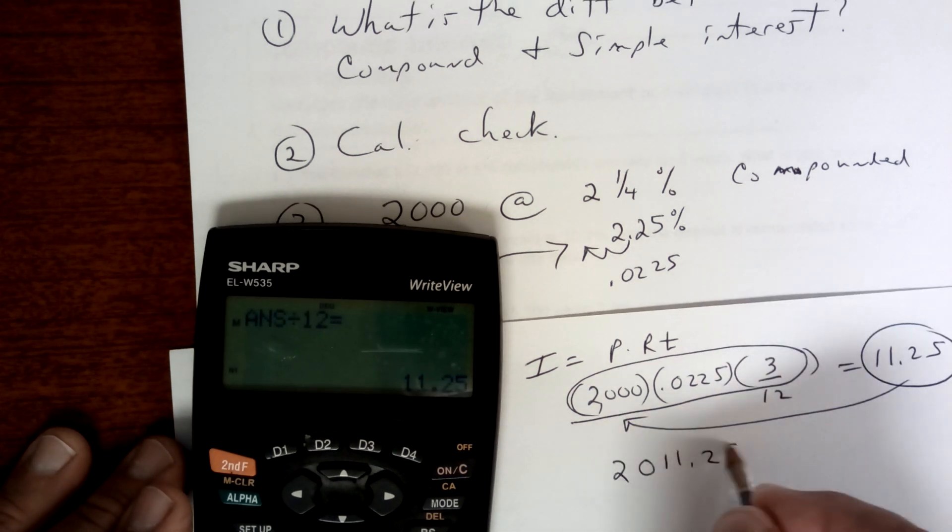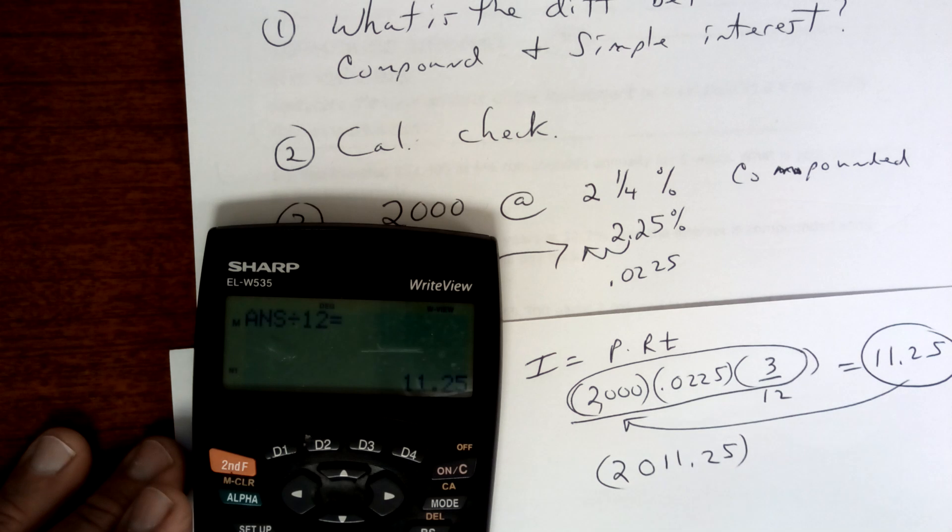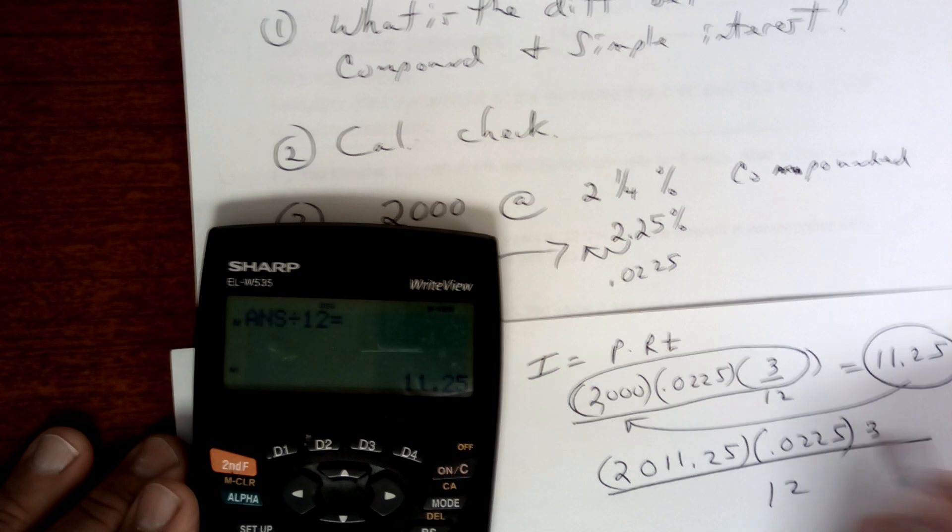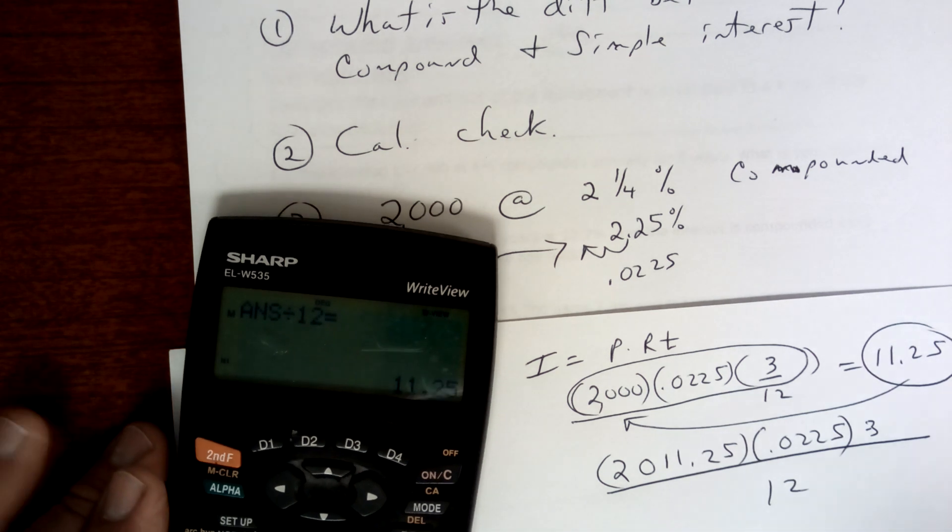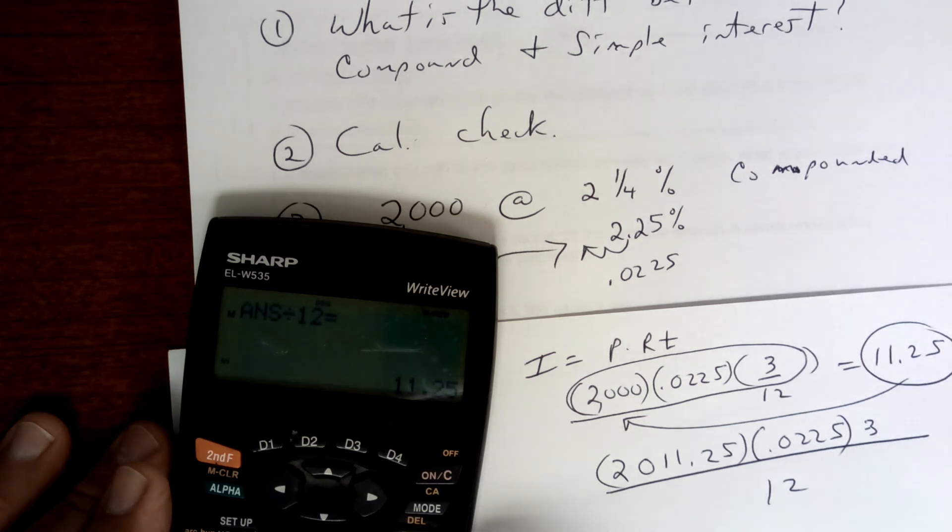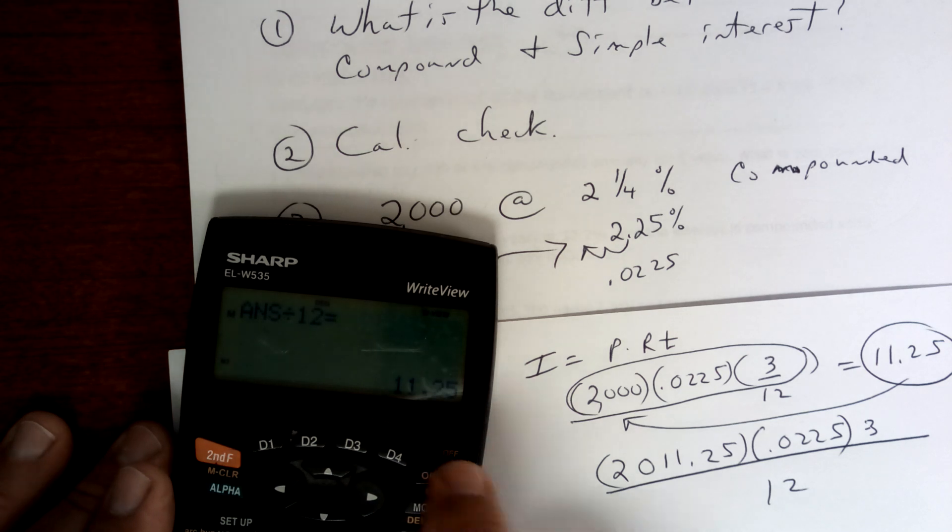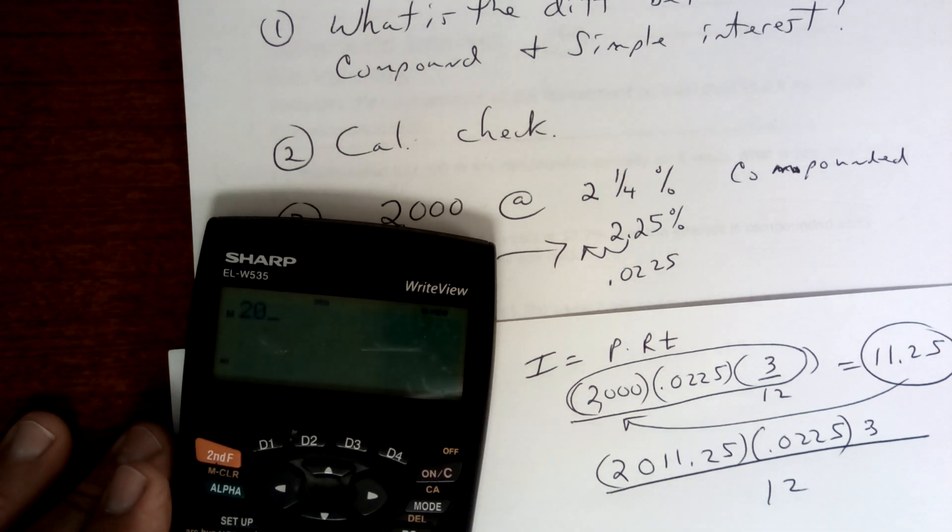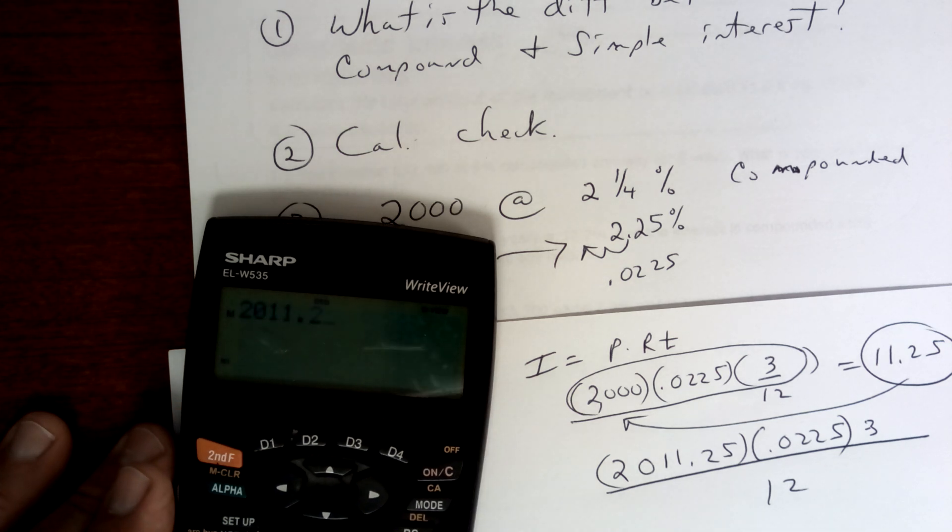Now you add this back to the $2,000, so now you're going to have $2,011.25 as your new principal times the rate times 3 divided by 12. Okay, so that's the first three months. Now this will be the second three months. So this is the first, this one will be the second.